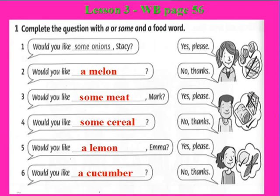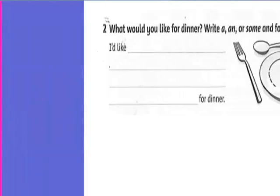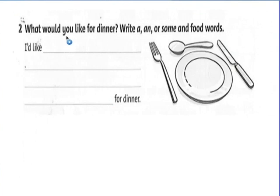Now we turn to exercise 2. What would you like for dinner? Write using 'a', 'an', or 'some' and food words. Now write about the foods you want for dinner.